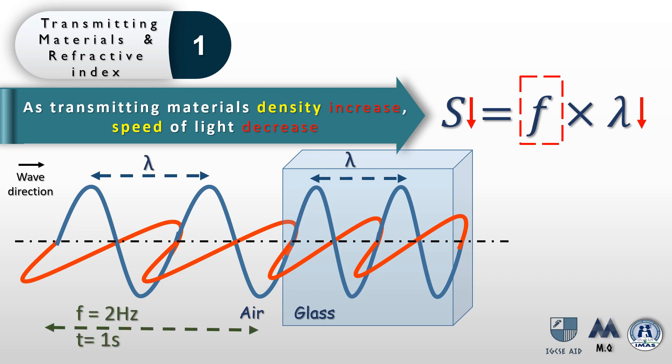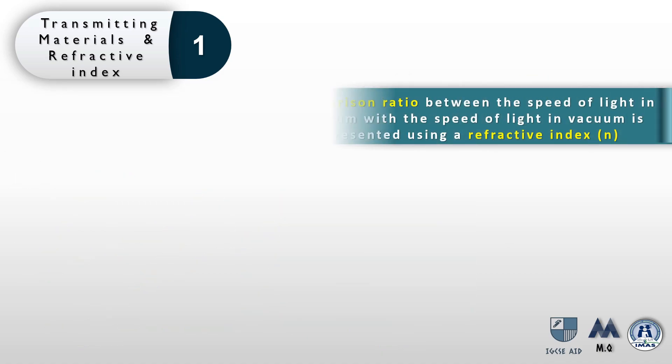Keep in mind that the frequency remains constant. If the frequency in air was two hertz — meaning two cycles completed in one second — then the frequency in glass will also remain two hertz. Next on our list is the refractive index, which is just a comparison ratio between the speed of light in vacuum and the speed of light in a certain medium.